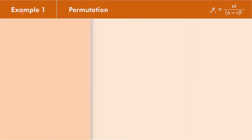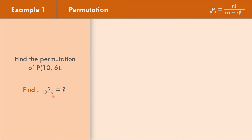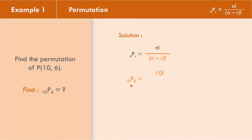In example number 1, find the permutations of P(10, 6) — meaning, let us get the permutations of 10 objects taking 6 at a time. The formula is permutations of N objects taking R at a time equals N factorial all over the quantity N minus R factorial. Let us replace N with 10 and R with 6, so we get 10 factorial all over 10 minus 6 factorial.